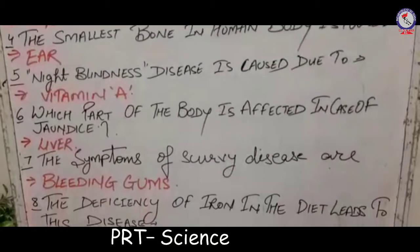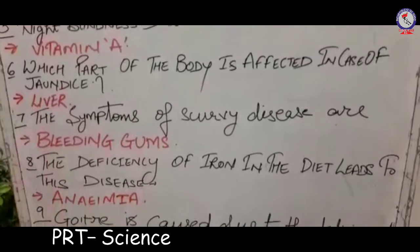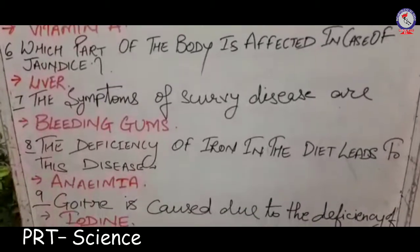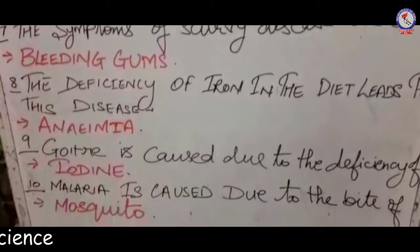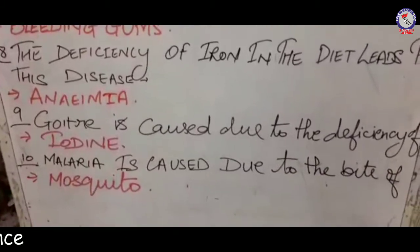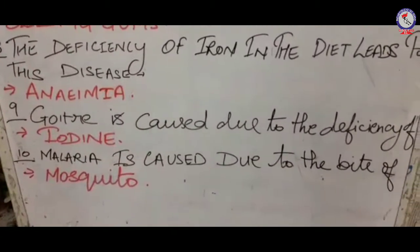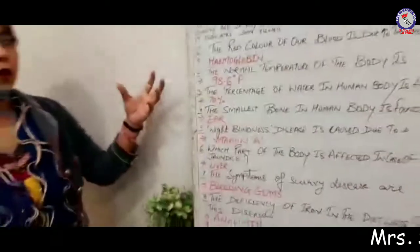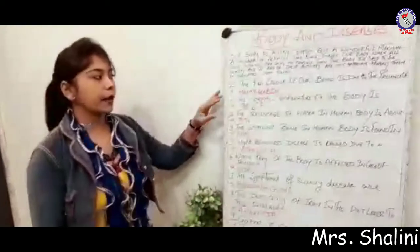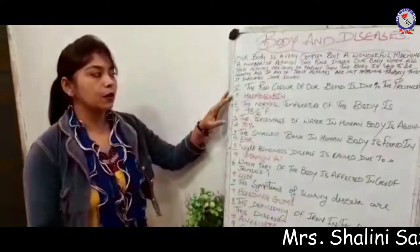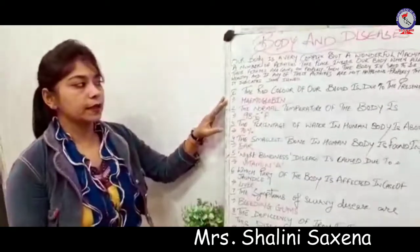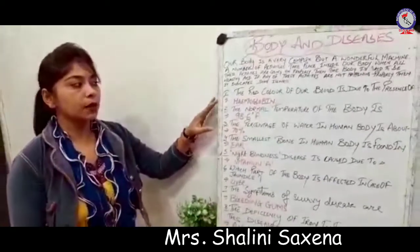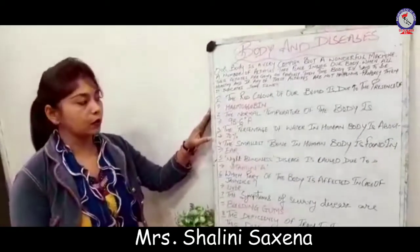Now there are some points we will be going over. First one: the red colour of blood is due to the presence of hemoglobin. Hemoglobin की वजह से हमारे blood का colour red होता है.